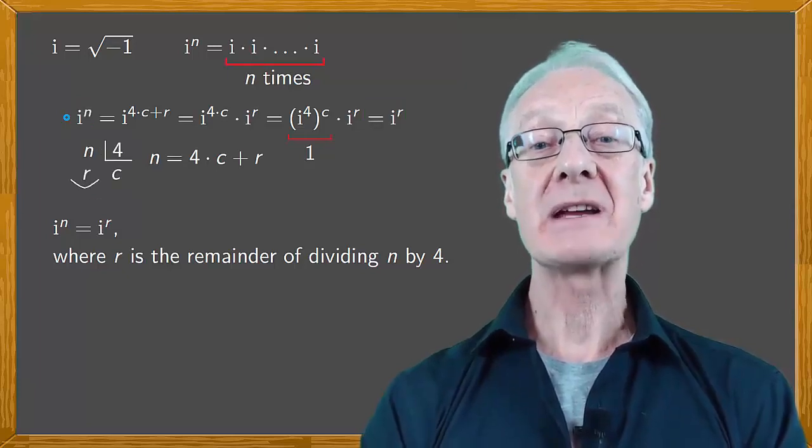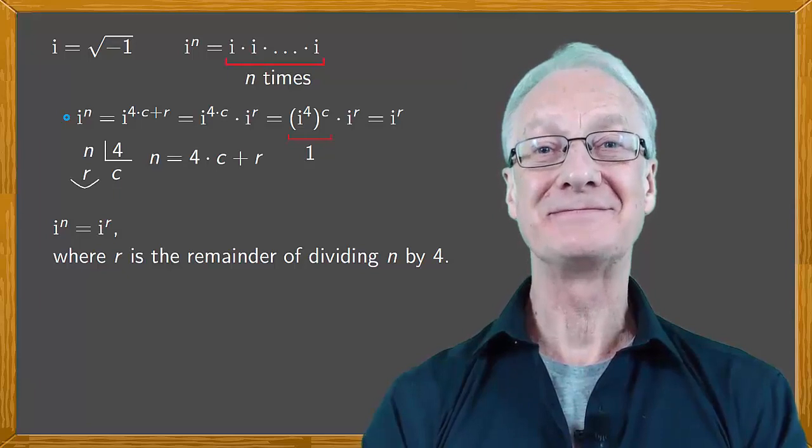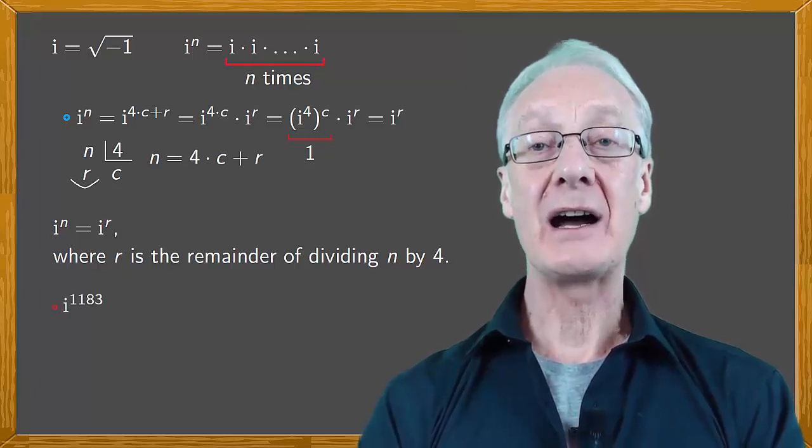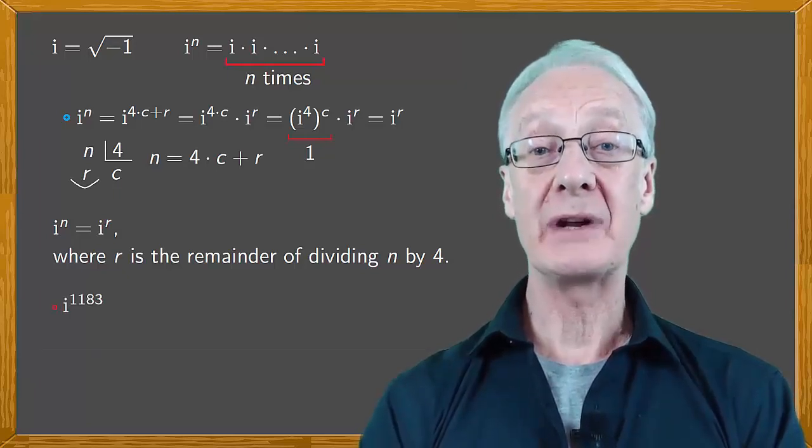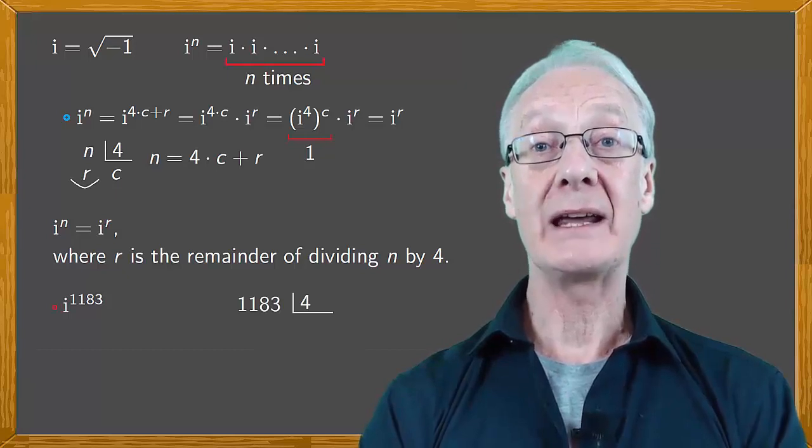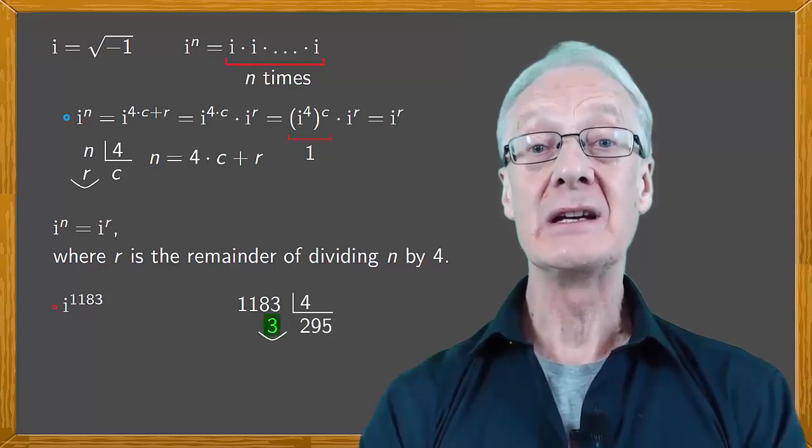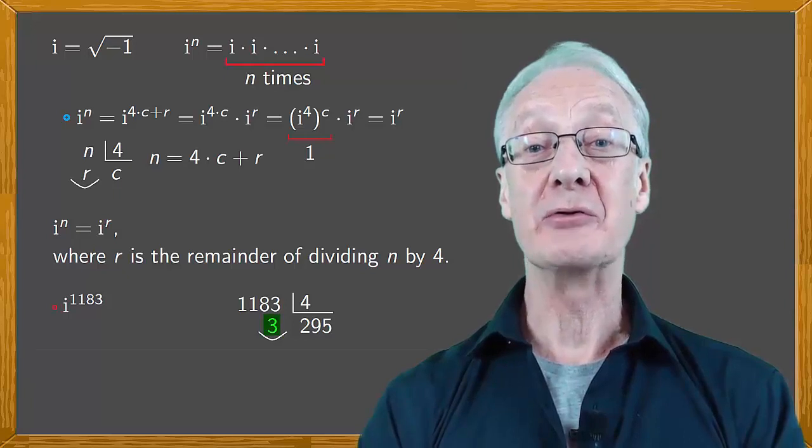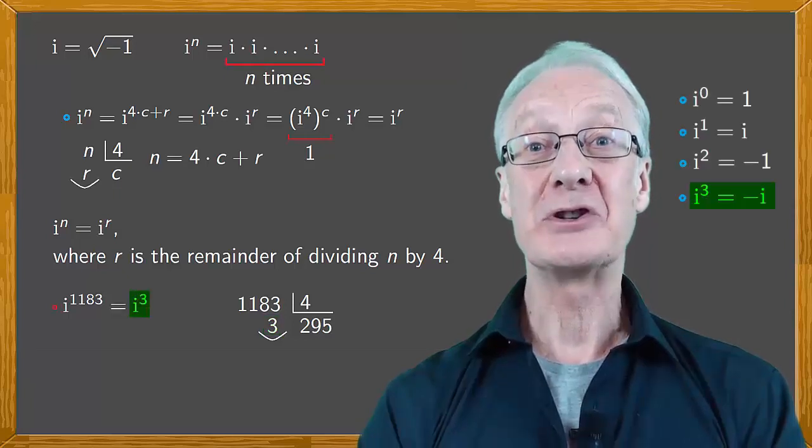Let's look at some examples where we can apply this result. Say we want to calculate i to the power of 1183. If we divide 1183 by four, we get a remainder of three. So our problem reduces to i to the three, which is minus i.